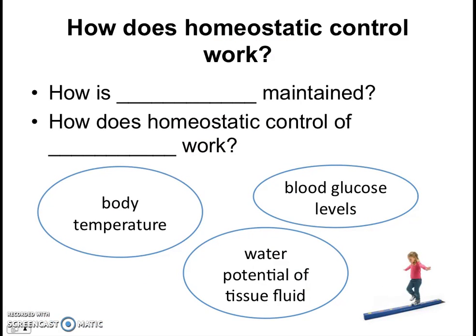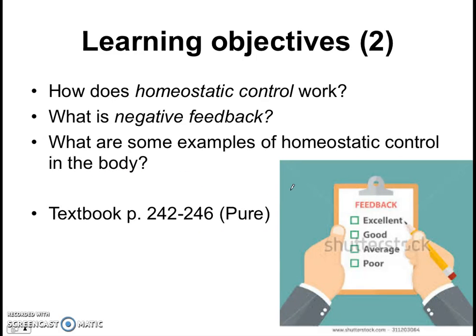So then the question is, how does homeostatic control work? Let's take body temperature as an example — how is body temperature maintained and how does the homeostatic control of body temperature work? Or blood glucose — how is blood glucose level maintained? These are the questions we're going to be exploring in this video. We're going to look at how homeostatic control works, and while doing so, we're going to learn a new term called negative feedback, which has a very special meaning in biology. Finally, we'll end off by looking at some examples of homeostatic control that take place in our body.